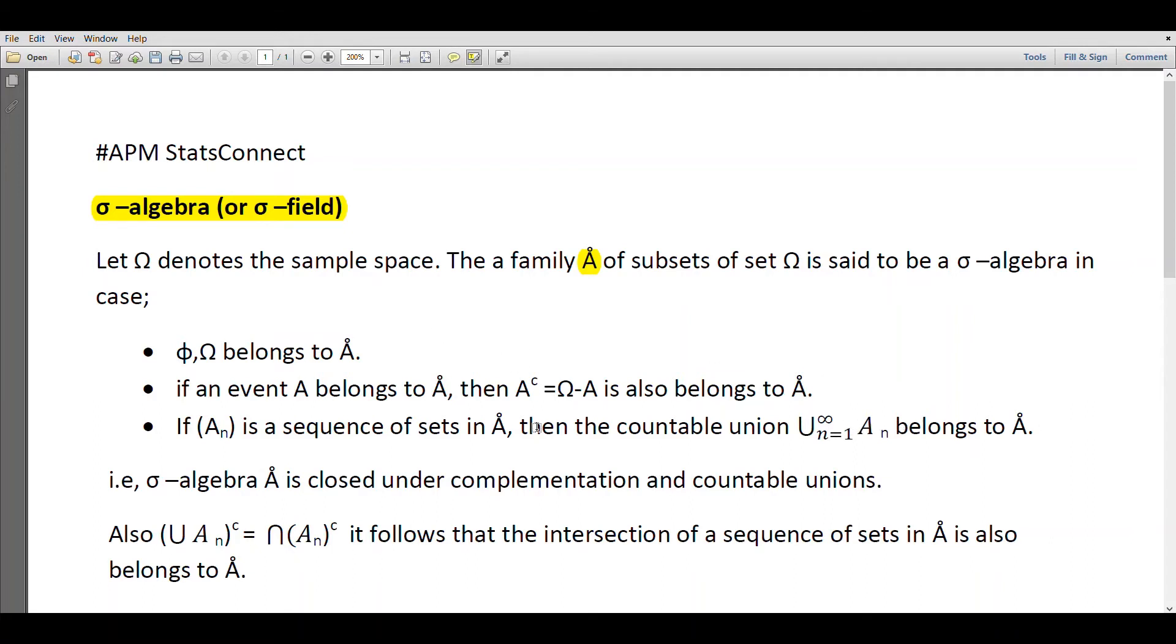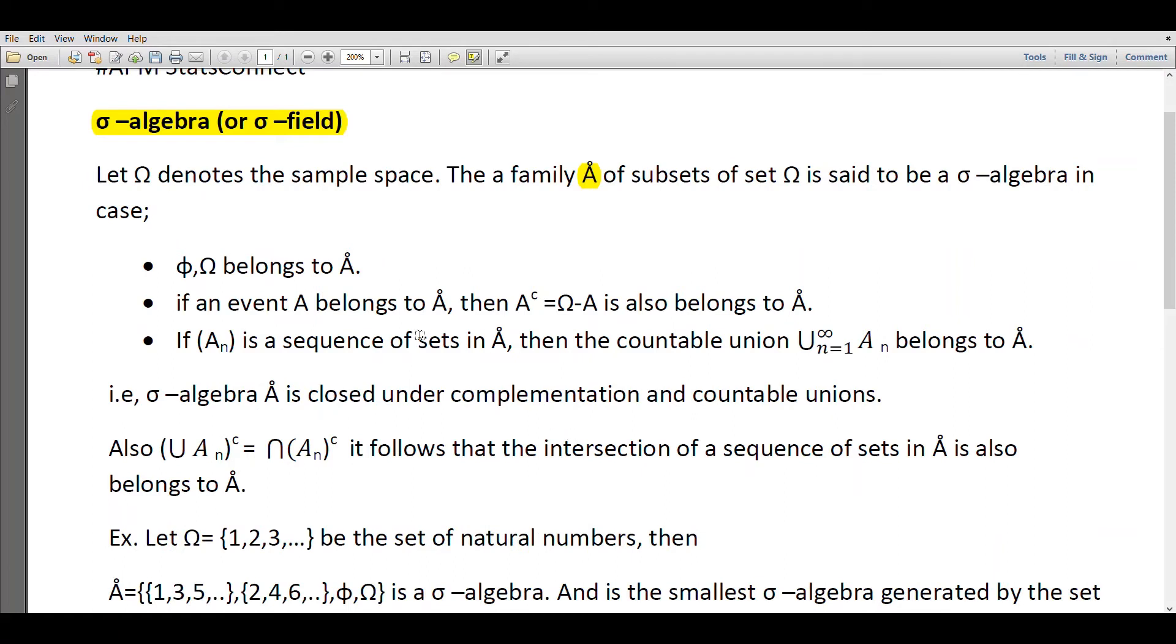If all these conditions are satisfied, then the collection A is a sigma algebra. That is, σ-algebra A is closed under complementation and countable unions.